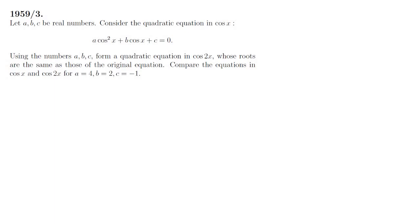We would like to acknowledge the Art of Problem Solving for the backbone of the solution, and we hope that this video takes you through a more step-by-step approach. First, we want to link cos x with cos 2x, which we can do using the double angle formula, which states that cos 2x is equal to 2 cos squared x minus 1.